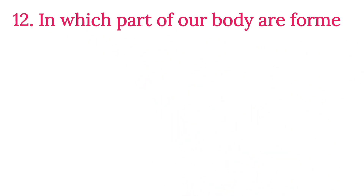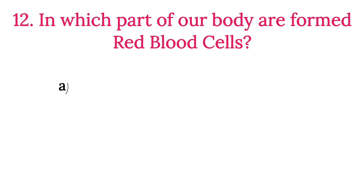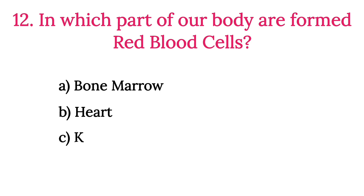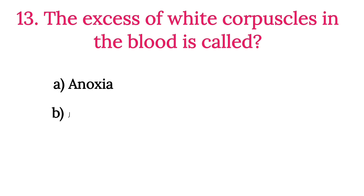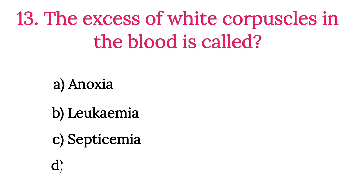MCQ Number 12: In which part of our body are red blood cells formed? Option A: Bone Marrow. Option B: Heart. Option C: Liver. The correct option is Option A, Bone Marrow.